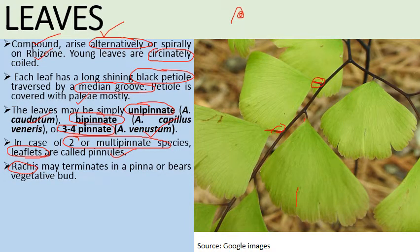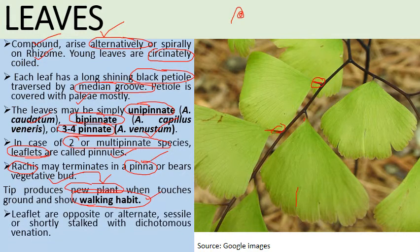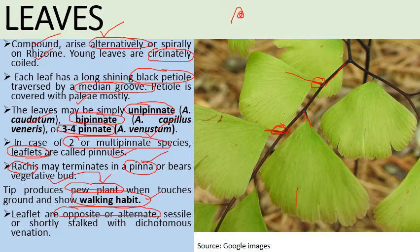The rachis of Adiantum may terminate into a pinna or bear a vegetative bud. When this bud touches the ground, it produces a new plant from that portion — this imparts the walking habit of Adiantum, which is why it is also called walking fern. The leaflets arise opposite or alternately on the main petiole and are shortly stalked with dichotomous venation — one vein divides into two veinlets — which is known as dichotomous venation.